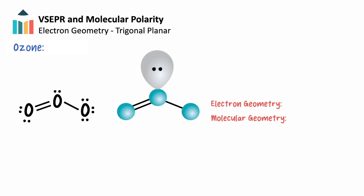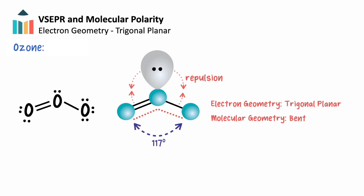The ozone molecule also has three electron domains, and as a result will have a trigonal planar electron geometry. As with the tetrahedral molecules of ammonia and water, the non-bonding electron pair seen in ozone does indeed affect its molecular geometry. The molecule of ozone appears bent, with a bond angle of about 117 degrees, slightly less than the expected 120. This is again due to the increased repulsion of the lone pair of electrons on the central oxygen atom.